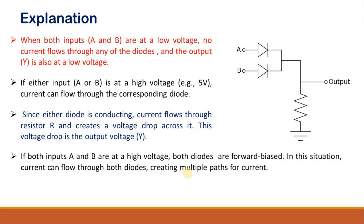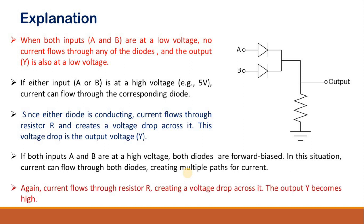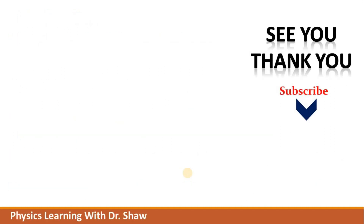If both inputs A and B are at high voltage, both diodes are in forward bias configuration. In this situation current can flow through both diodes, and that current will pass through the resistance, resulting in a high output voltage. So I hope this explanation and experiment are clear to you. See you in the next video with some other topic.